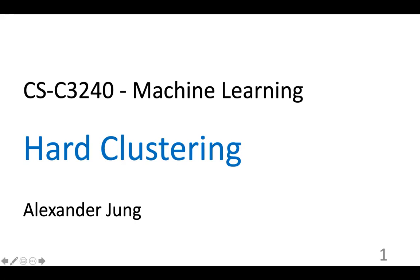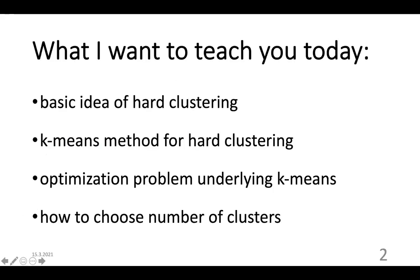That's why they're called unsupervised learning methods. So what I want to teach you today is the basic idea of hard clustering, how to represent clusters, and then I will show you one of the most popular methods for hard clustering, which is called K-means. We will see that K-means is again an optimization method — similar to all the machine learning methods we have heard before. K-means turns out to minimize an error or an empirical risk function, which looks a bit different than the average loss used for regression or classification. The number of clusters needs to be given for K-means.